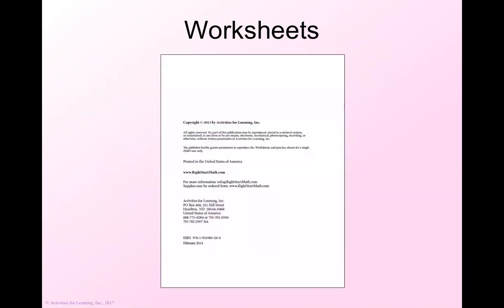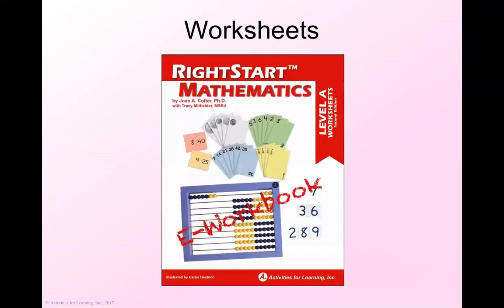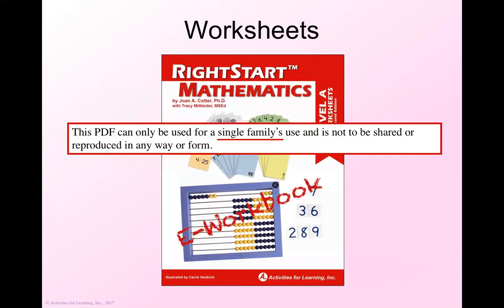One more word about the worksheets - on the copyright page, you'll see that the publisher grants permission to reproduce the worksheets and practice sheets for a single child's use. For example, if you have twins in one level, you'll need a second set of worksheets for the second child. If you have several children, it may be a good idea to look at the e-workbook. It's a little bit more, but you can make as many photocopies as you need for your family.